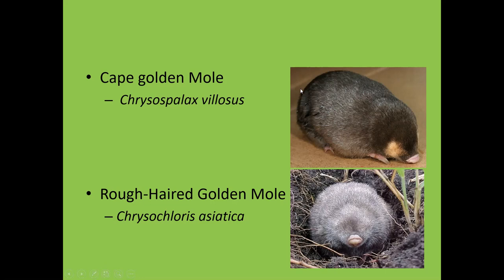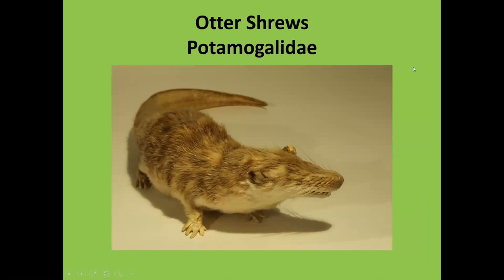The Cape golden mole is truly beautiful and quite common in the Cape, often found as victims of people's cats and dogs. The rough-haired golden mole from the Transvaal is shaggier and fluffier. You can see how its fingers have fused together into digging troughs — they're adapted to a subterranean environment and don't do well on the surface or in captivity.